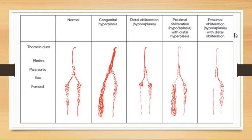In the normal pattern on lymphangiography you can see the thoracic duct, para-aortic lymph nodes, iliac and femoral lymph nodes. In congenital hyperplasia, dilated lymphatics are seen. If distal obliteration (hypoplasia or aplasia) is present, proximal dilatation occurs. If proximal obliteration exists, dilated lymphatics are seen on the right side, and combined proximal and distal obliteration shows its own characteristic pattern.